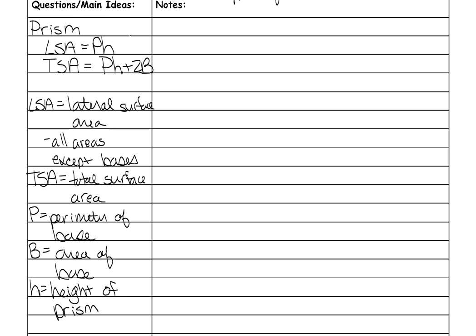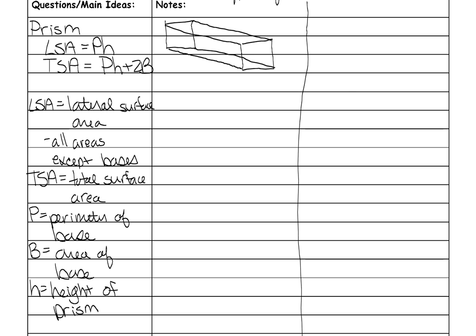I'm going to show you two example problems and also show you how I draw them so it might help you in your notes. To draw a rectangular prism, you draw two squares — or as close to squares as you can, though they could be rectangles — and offset them diagonally from each other. Then you connect top right corner to top right corner, top left to top left, bottom right to bottom right, and bottom left to bottom left. Now I'm going to label all of its pieces.